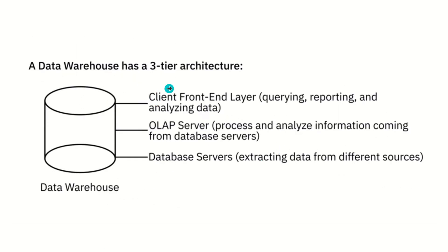A data warehouse has a three-tier architecture. The bottom tier includes the database servers, which can be relational, non-relational, or both, and extracts data from different sources. The middle tier consists of an OLAP (Online Analytical Processing) server — a category of software that allows users to process and analyze information from multiple servers. The top tier is the client front-end layer, which includes all tools and applications used for querying, reporting, and analyzing data.